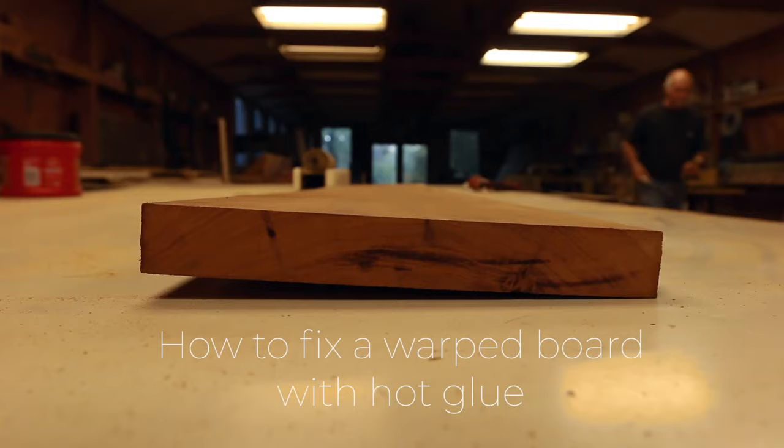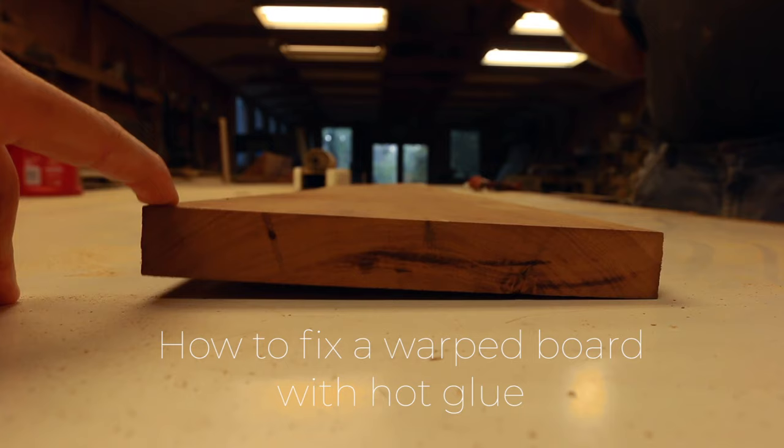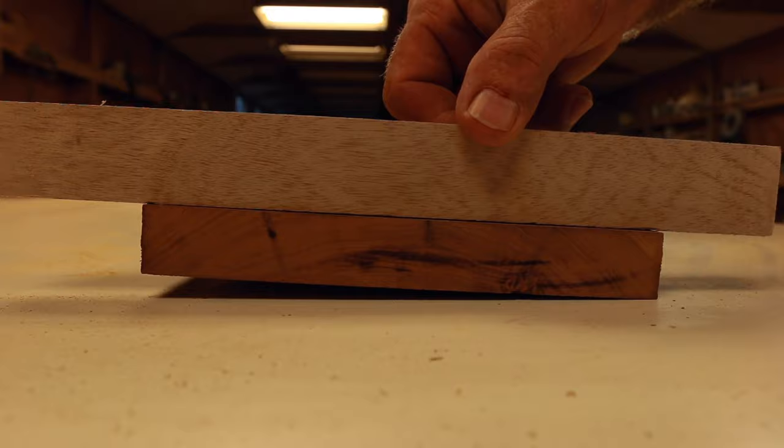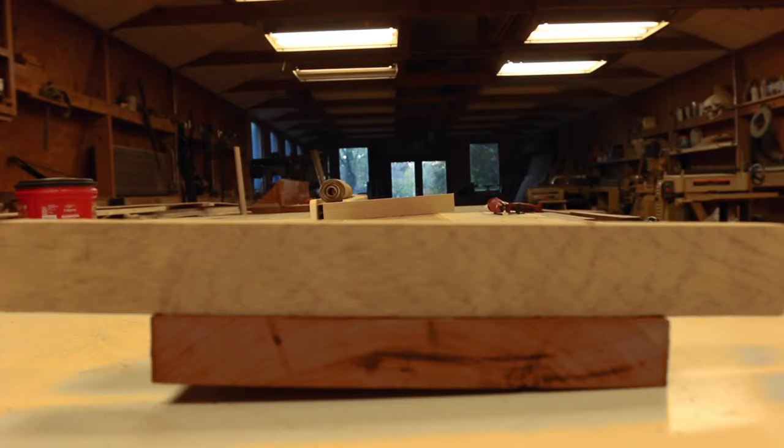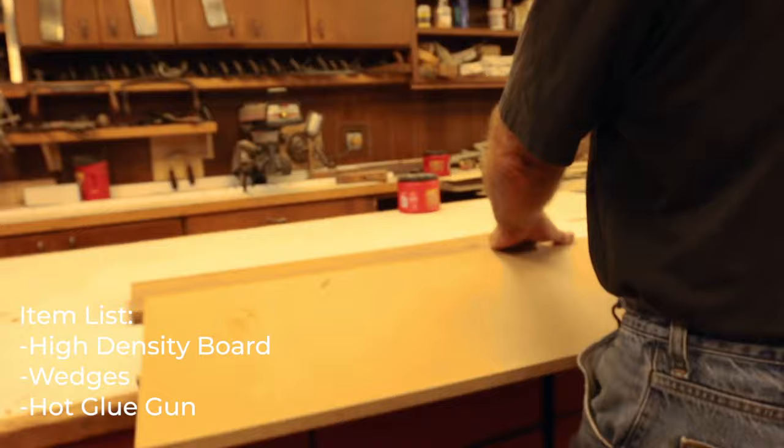You need to start by looking at an unusual board. Take a shot down through there to where they can see the twist in it. Good flat piece of high-density board.